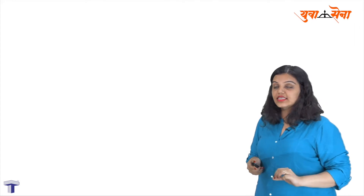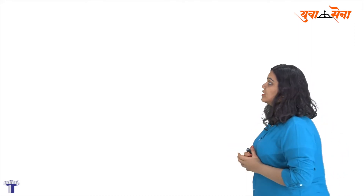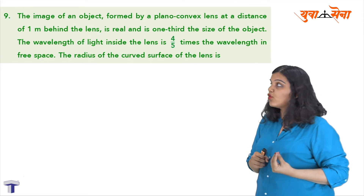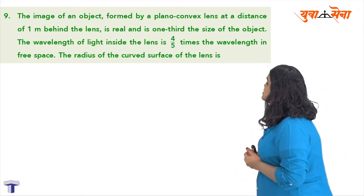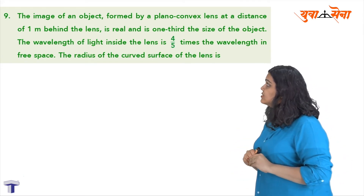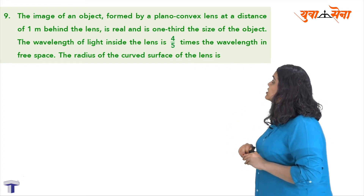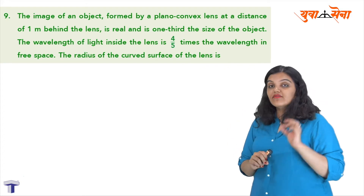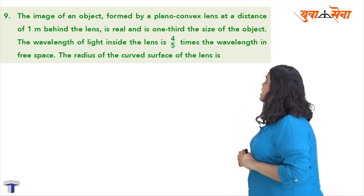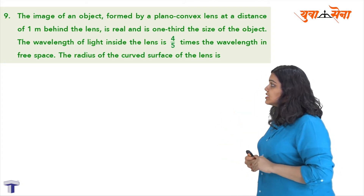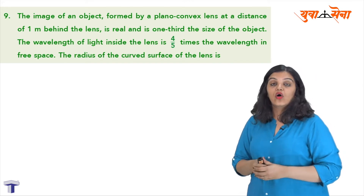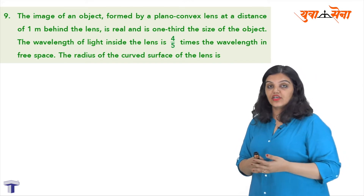Hello everyone, let's quickly take a look at question number 9. Question number 9 says that the image formed by a plano-convex lens at a distance of 1 meter behind the lens is real and is one third the size of the object. The wavelength of light inside the lens is 4 upon 5 times the wavelength in free space, and we have been asked to find the radius of curvature of the curved surface of the lens.